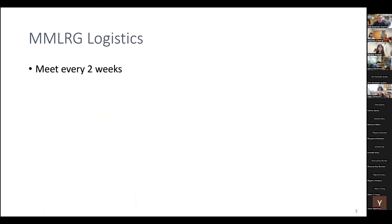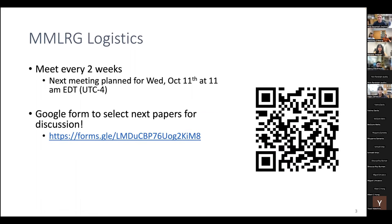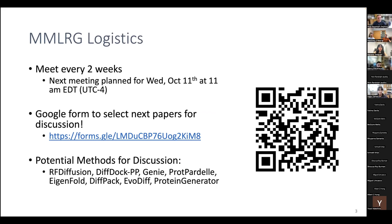Just briefly on logistics: we're meeting every two weeks. The next meeting is going to be October 11th. There's a Google form to select the next paper — just a couple of options. These include ARC diffusion and a bunch of different protein models, including some very recent ones such as Propartal and EvoDiff. So feel free to look at this form and fill it out before next meeting so we can decide on what's coming next.